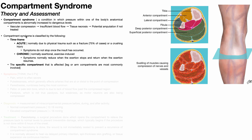Compartment syndrome is classified generally in two ways: number one by time frame, and number two by the specific compartment that is affected. We already saw the compartments of the lower leg; we could also have compartments of the thigh, the forearm, or the brachium. And by time frame we're talking about either acute compartment syndrome or chronic exertional compartment syndrome.